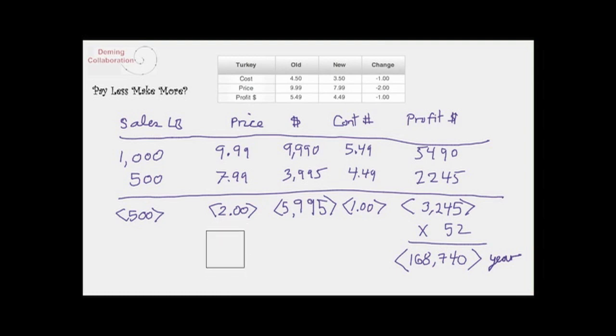So the poor guy - here he thought he had saved the company $1,000 a week or $52,000 a year, when in truth he had lost about $6,000 a week in sales or $312,000 plus $168,740 in pure profit dollars.